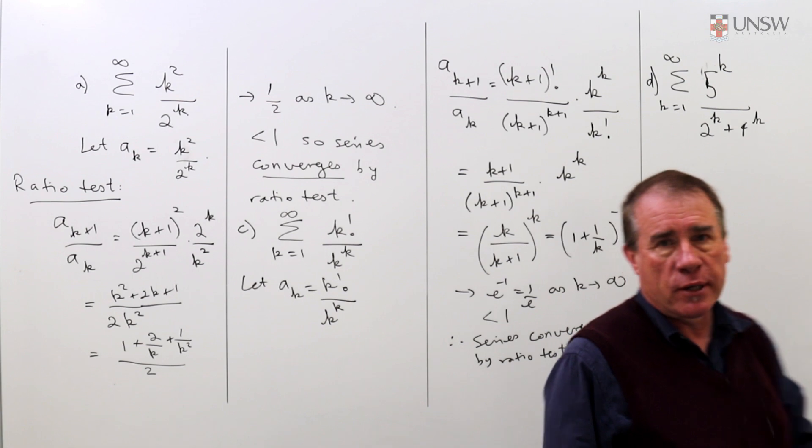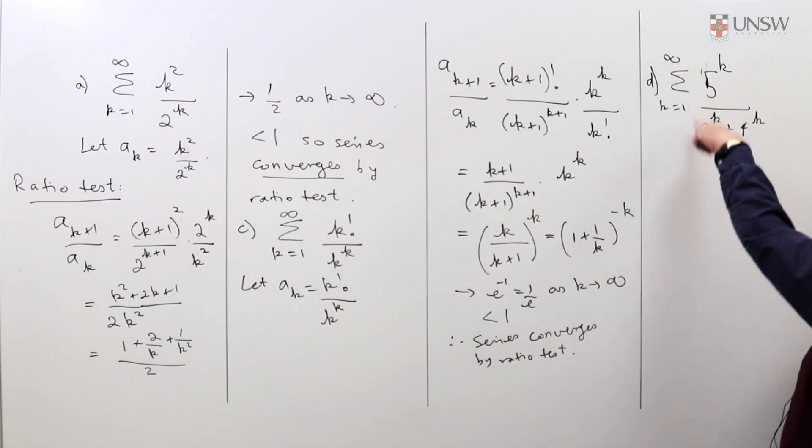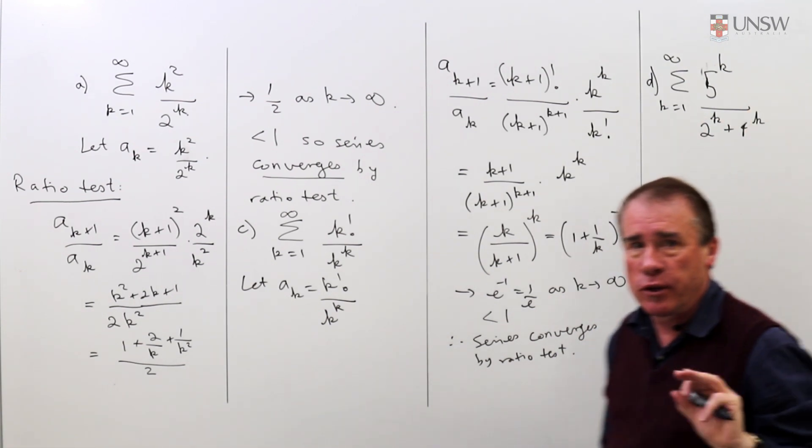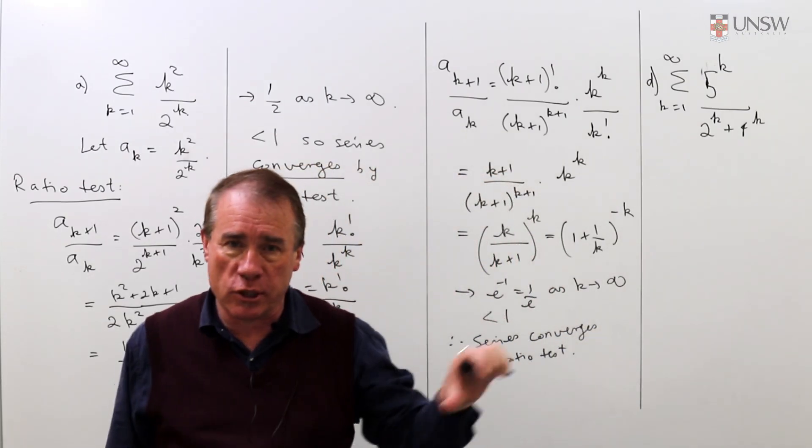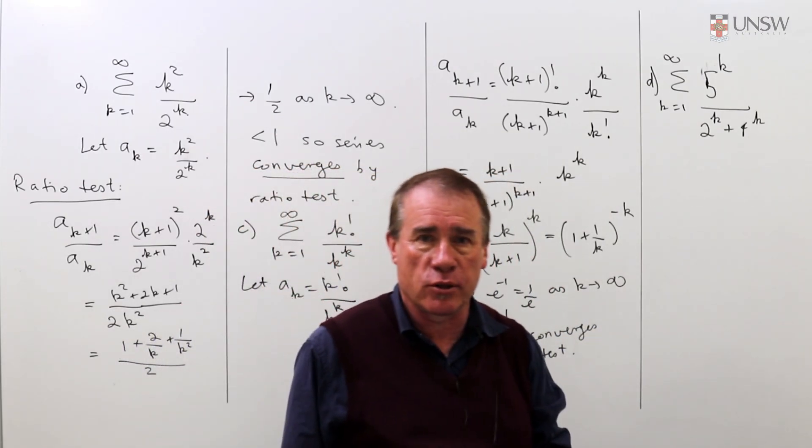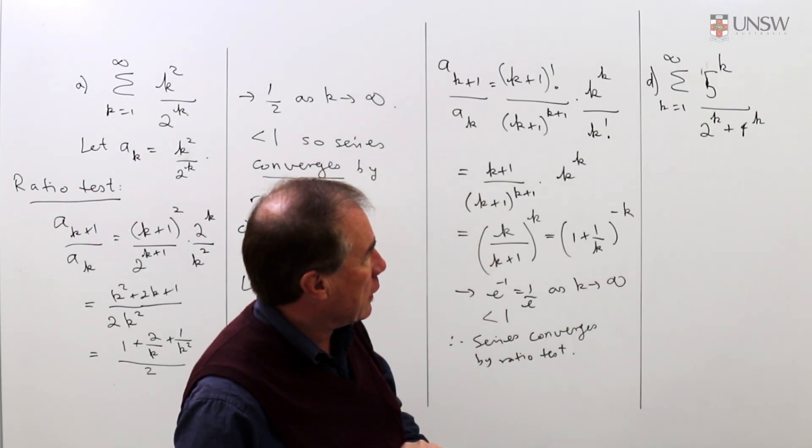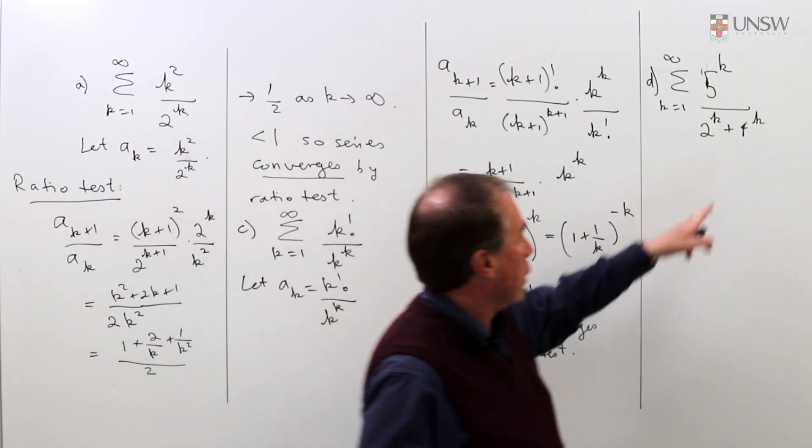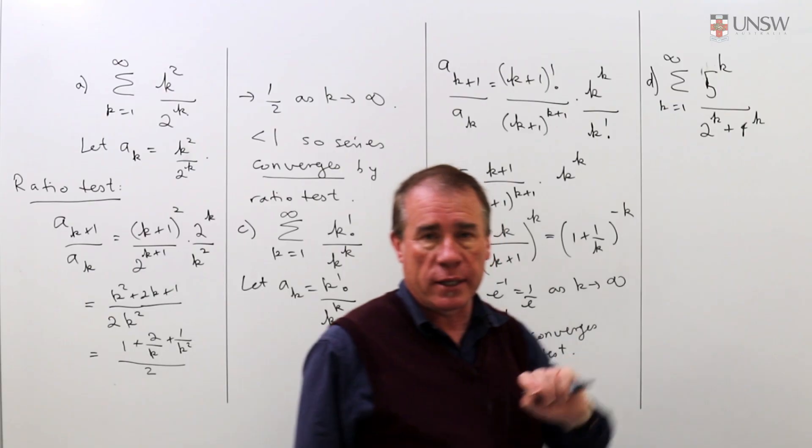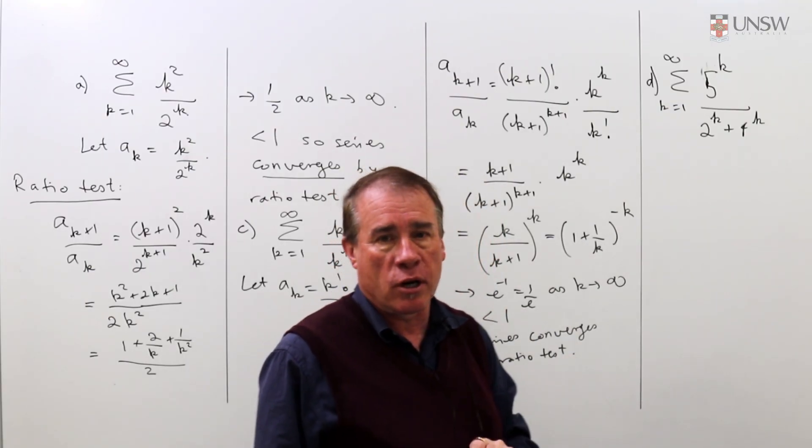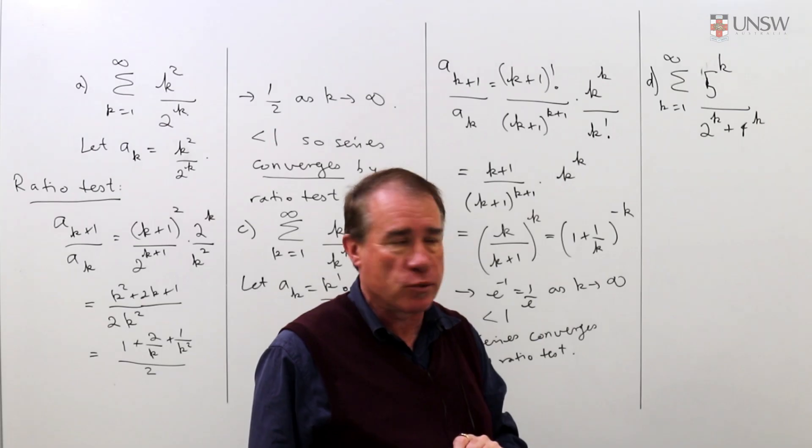When I look at this I think, in order for any series to converge the general term must be getting smaller. It's got to be going to 0 as k goes to infinity. This is looking a little bit funny because the top is growing far more quickly than the bottom is. So I wouldn't use the ratio test on this one.